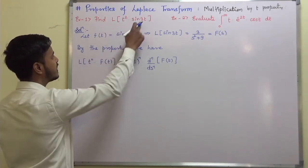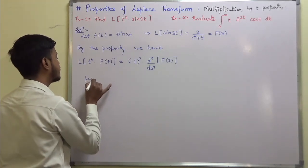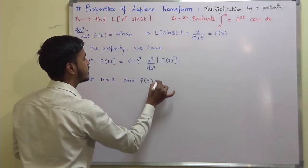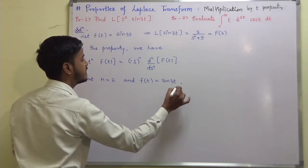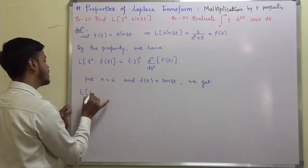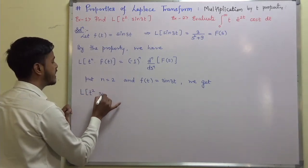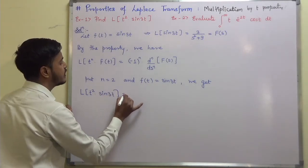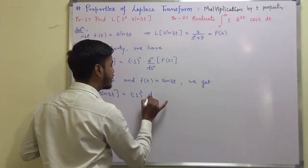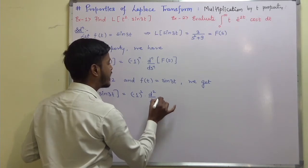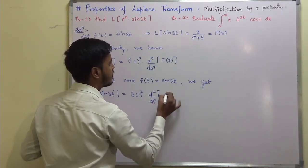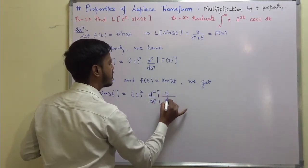In place of n we have t squared times f(t) = sin(3t). So put n = 2 and f(t) = sin(3t). We get: Laplace transform of t squared into sin(3t) is equal to minus 1 to the power 2 times d²/ds² of F(s), where F(s) = 3 upon s squared plus 9.